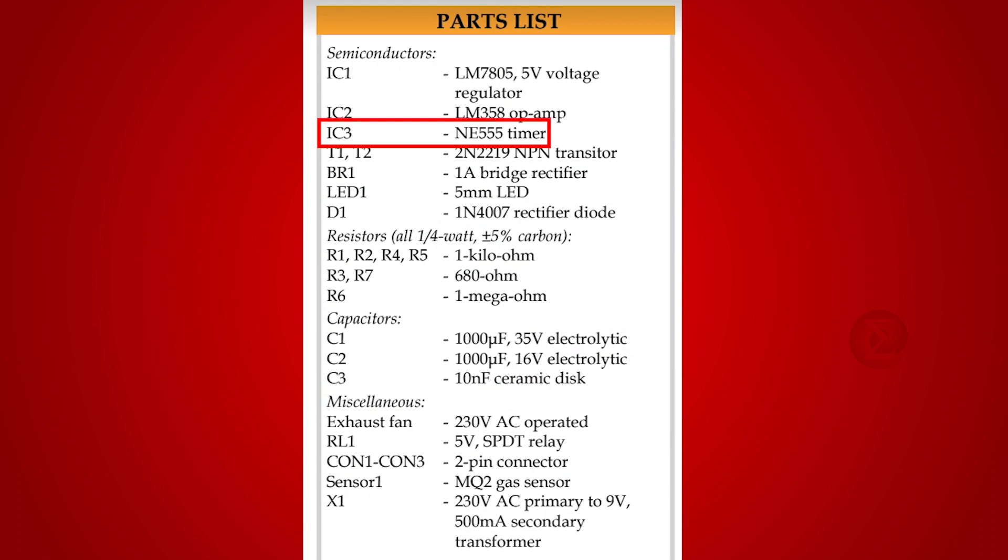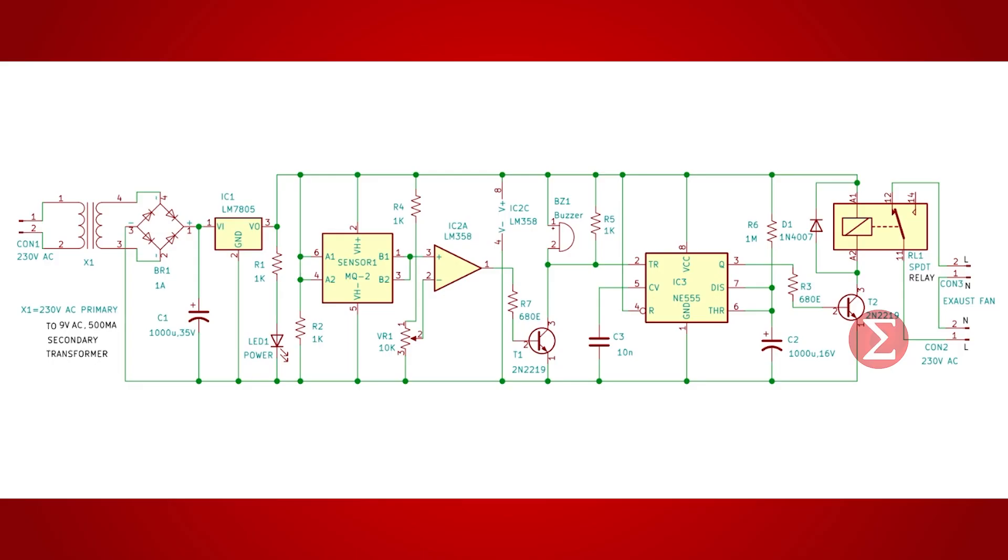IC LM7805 voltage regulator to get a 5V power supply. Apart from this, a transformer, a bridge rectifier, some resistors, capacitors, a few jumper wires, and a breadboard are required. Let us take a look at the circuit now.